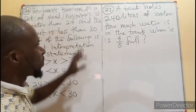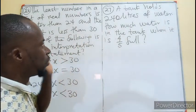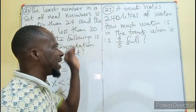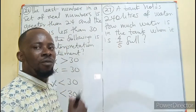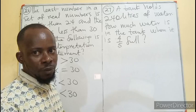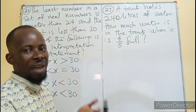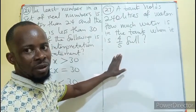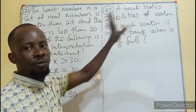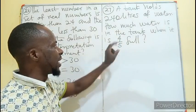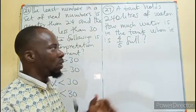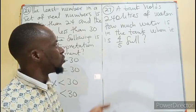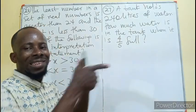Question 27: A tank holds 240 liters of water. How much water is in the tank when it is 4/5 full? If it is full, it means 5/5. Now the tank is reduced, meaning 1/5 of the tank is empty.